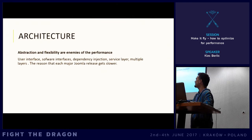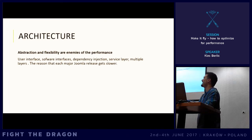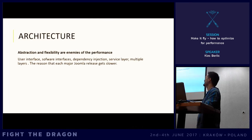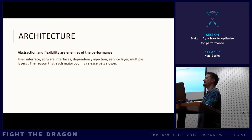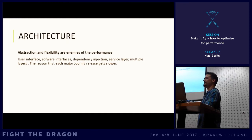One thing about architecture that is not really thought about: abstraction and flexibility for the end user are basically enemies of performance. You think about user interfaces, software interfaces, dependency injection, service layers, etc. This is one of the reasons that each major Joomla release gets a little bit slower. Luckily, at the same time PHP progresses and servers progress, so websites are still getting faster. But if you took Joomla 1 or Mambo and put it on today's infrastructure, it would run much faster than today's versions.